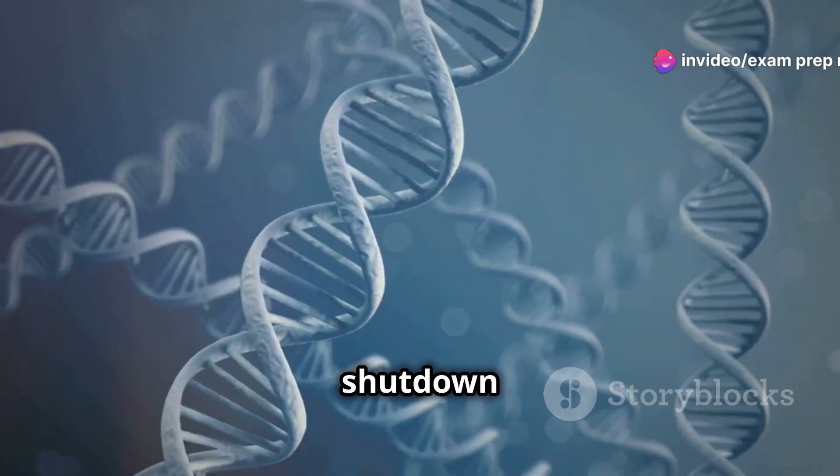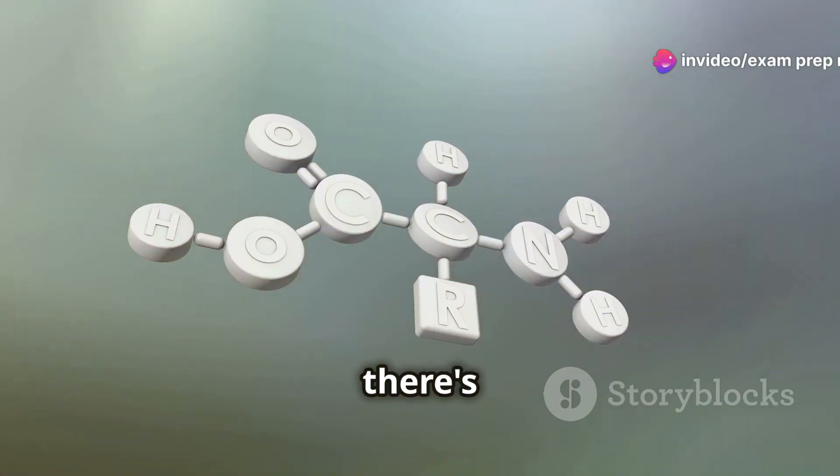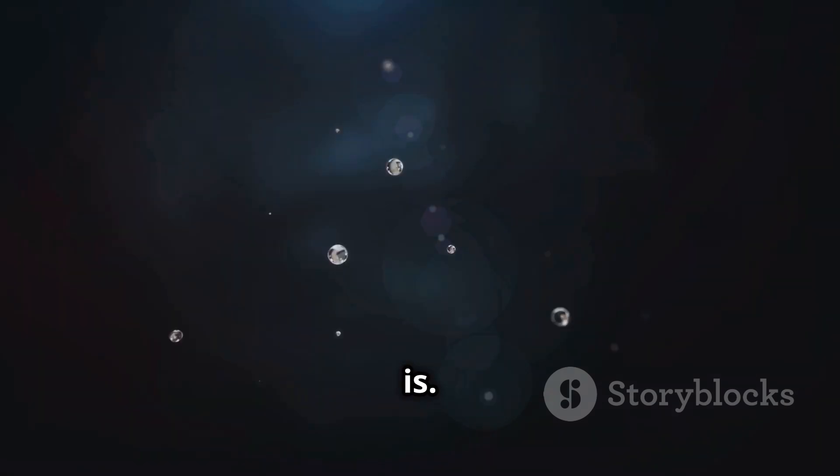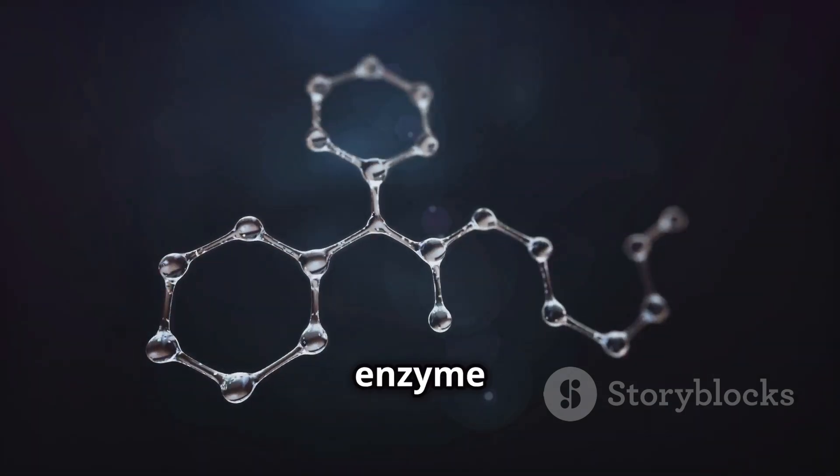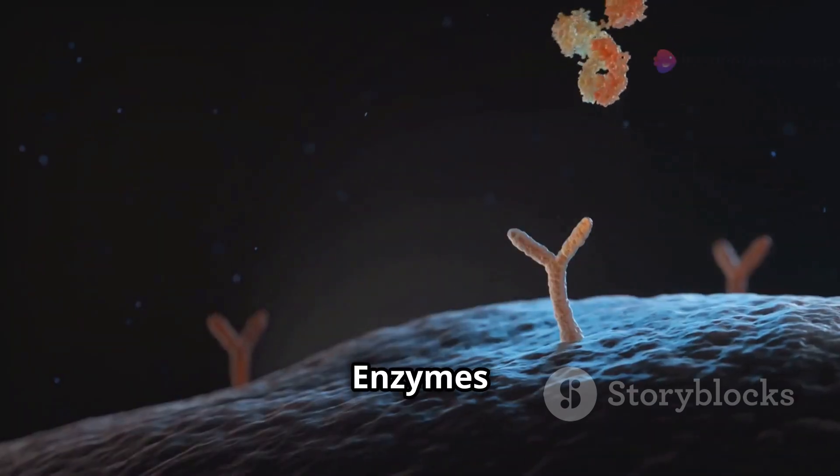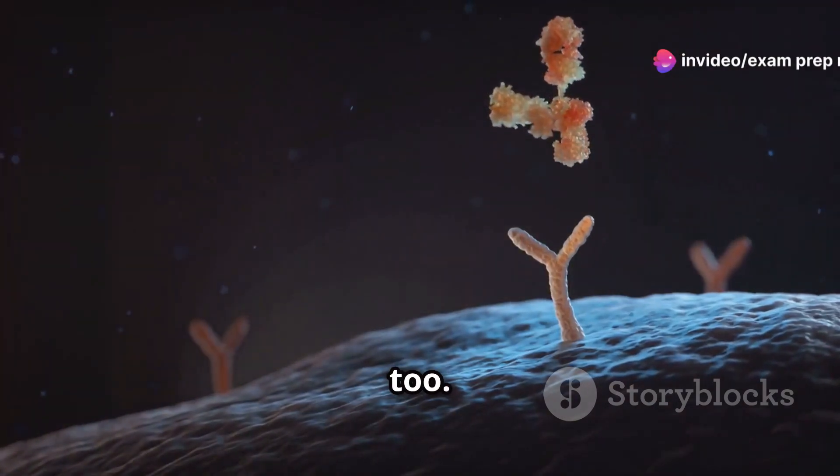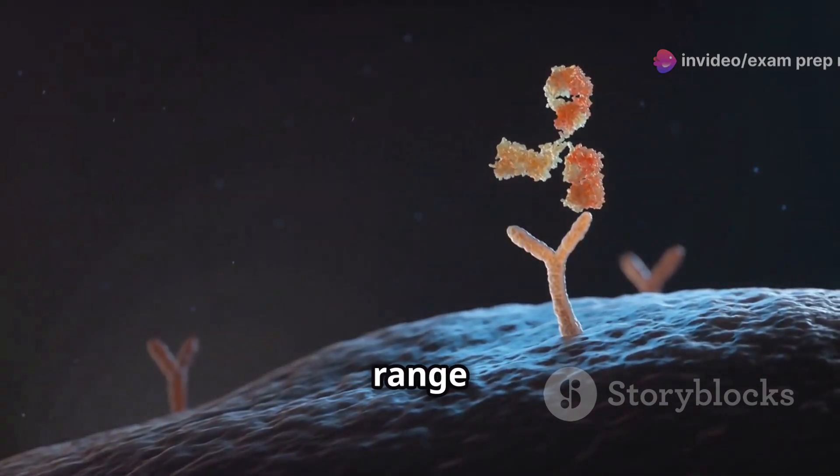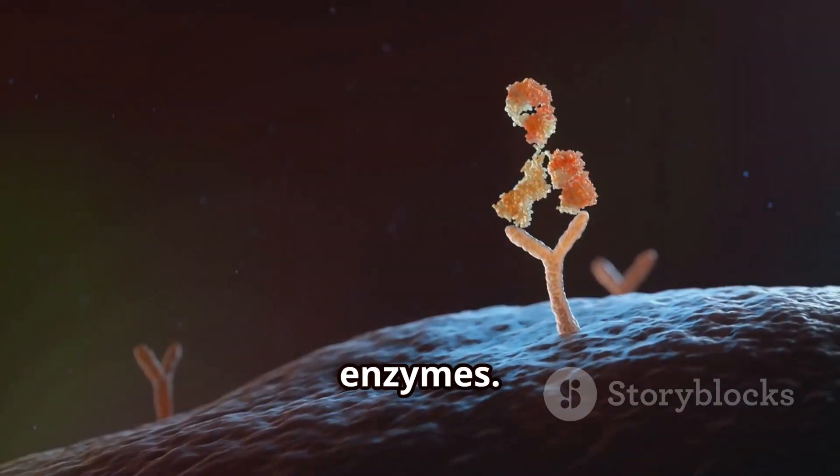Then there's pH, a measure of how acidic or basic a solution is. The pH level can also affect enzyme activity. Enzymes are picky about pH, too. Each enzyme has a specific pH range where it functions best, and this range can vary widely between different enzymes.